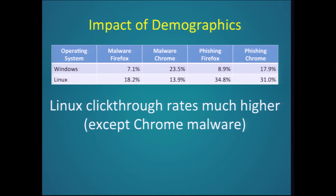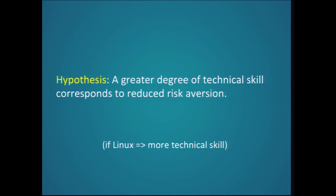We don't have a lot of demographic information, but we do have what operating system these users are using. We noticed that pretty much across the board, Linux click-through rates are much higher than Windows click-through rates. This leads to a hypothesis that the more skilled, the more elite you are, the more likely you are to do dangerous things — if Linux corresponds to more technical skills. I've seen this in every talk I've given in CS departments — everyone says they clicked through all the warnings. So maybe that is true.